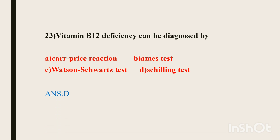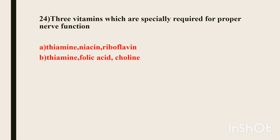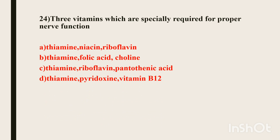Twenty-fourth question. Three vitamins which are specially required for proper nerve function are — Options include various combinations. The correct answer is thiamine, pyridoxine, and vitamin B12 — that is, B1, B6, and cobalamin. These three vitamins are very important for nerve function.